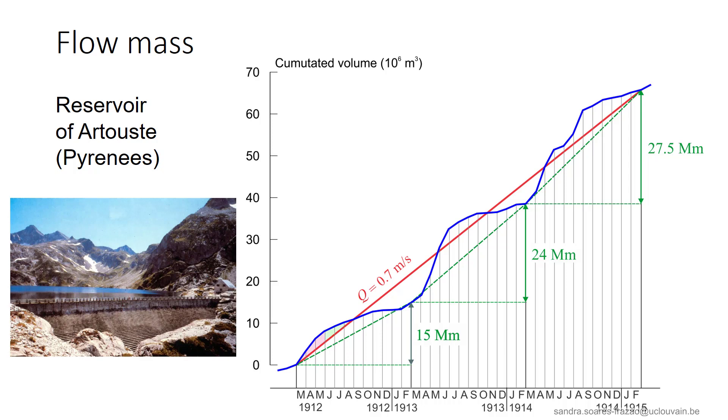Such a curve is useful to determine the size of a reservoir aimed, for example, at flow regulation. If the reservoir releases a constant discharge of 0.7 m3 per second, the reservoir fills up when the flow mass curve is steeper than the red line. This situation is represented here by the pink zone. And the reservoir empties if the slope is milder, which is represented by the green zone. This means that the maximum distance between the blue volume curve and the red line is the volume required for storage of the excess discharge.